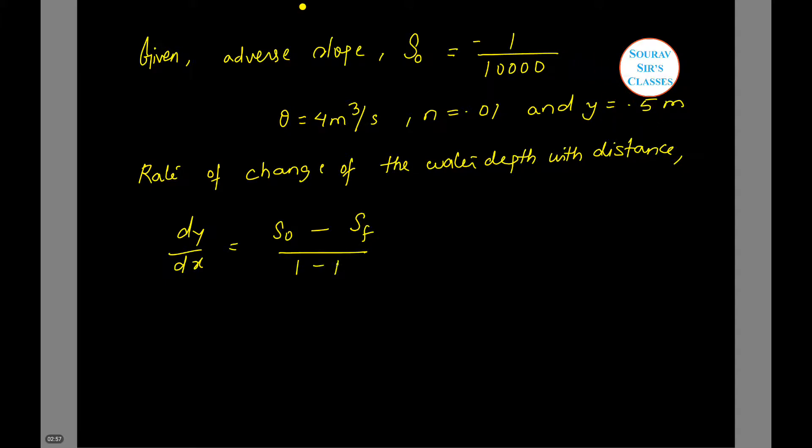Now Fr is the Froude number, which equals Q/(By√(gy)). Substituting the values: Fr = 4/(2 × 0.5 × √(10 × 0.5)) = 1.79